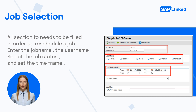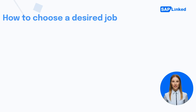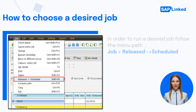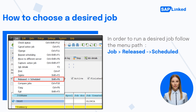Then in the job start condition, set the time frame. Once everything is filled in, press the Execute or F8 key to execute the job. Choose a desired background job and then follow the menu path from the top. Click on Job, then select the option Released Greater Than Scheduled.